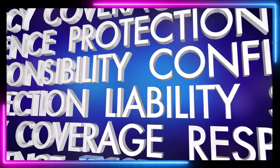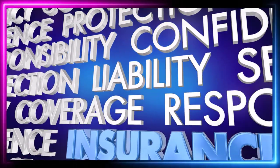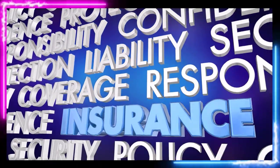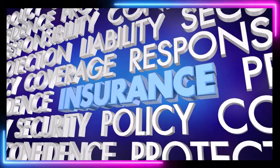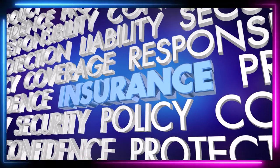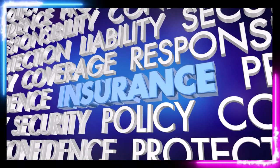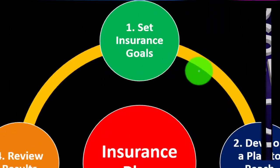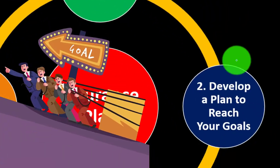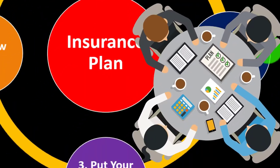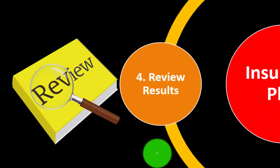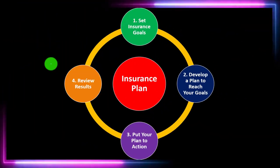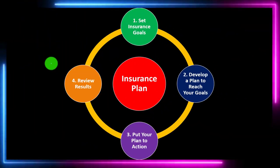Insurance is part of our long-term risk mitigation strategy where we follow the adage of measure twice, cut once — put a formal process in place: set the goals, develop a plan to reach them, put the plan in action, review the results, and repeat the process periodically.